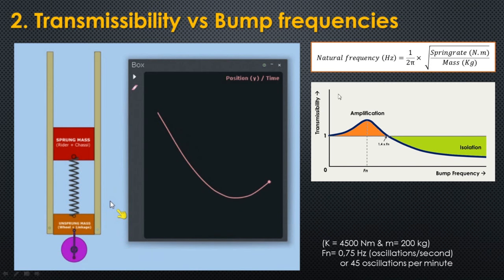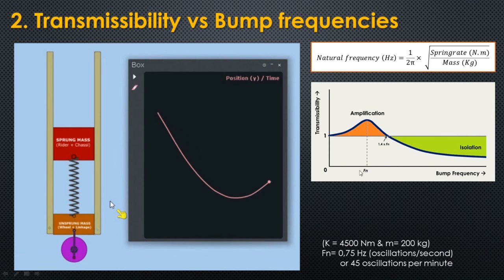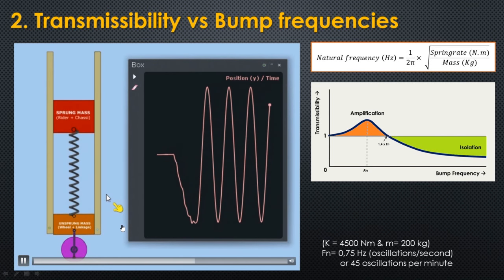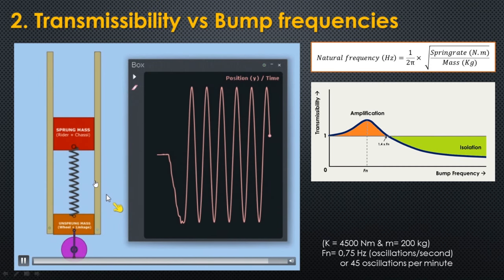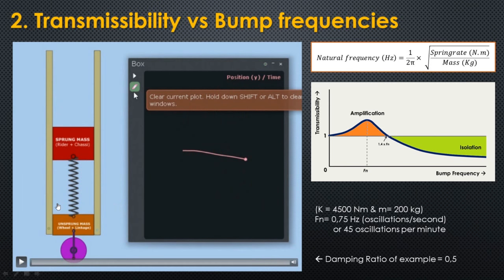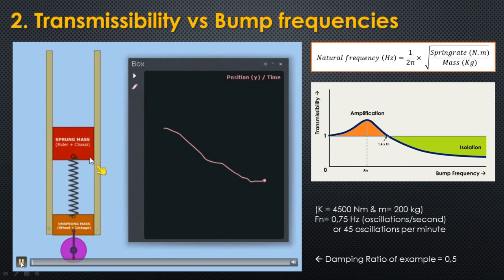In this simulation model we are going to see again this graph. I can change the bump frequencies and we will see what happens to the suspended mass, corresponding to the rider and bike or car chassis. This clip starts with no rebound damping — the system will oscillate infinitely at its natural frequency. In this model the natural frequency is about 0.75 Hz or 45 oscillations per minute. Now the spring is damped: it has a fast rebound but is damped — it does not oscillate infinitely.